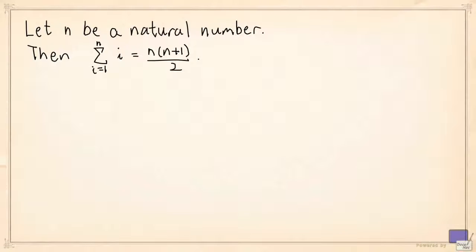Let n be a natural number. The statement that we want to prove is the sum of i as i ranges from 1 to n equals n times n plus 1 divided by 2.